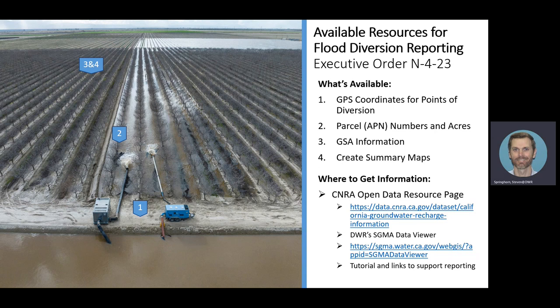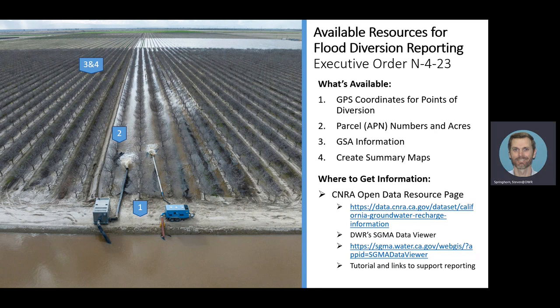Where you can go to get more information is the California Natural Resources Agency Open Data Platform, with the link shown on the slide. There is also a link to the California Department of Water Resources SGMA Data Viewer, which will be the topic of this tutorial.